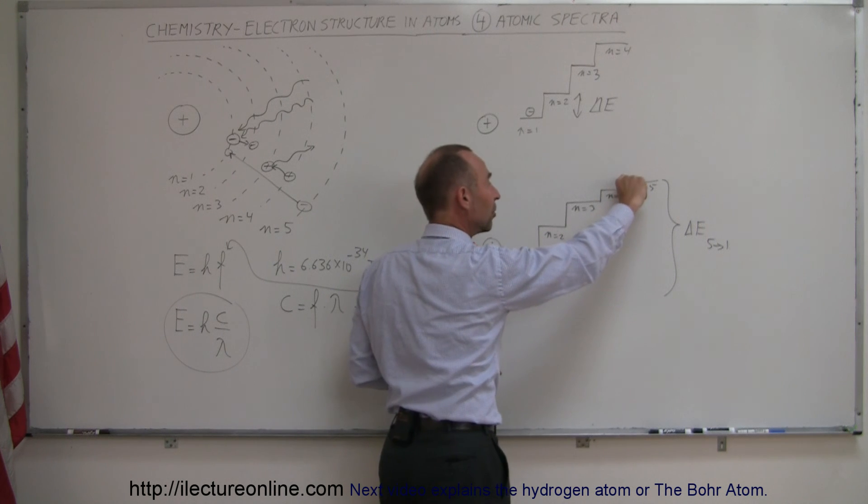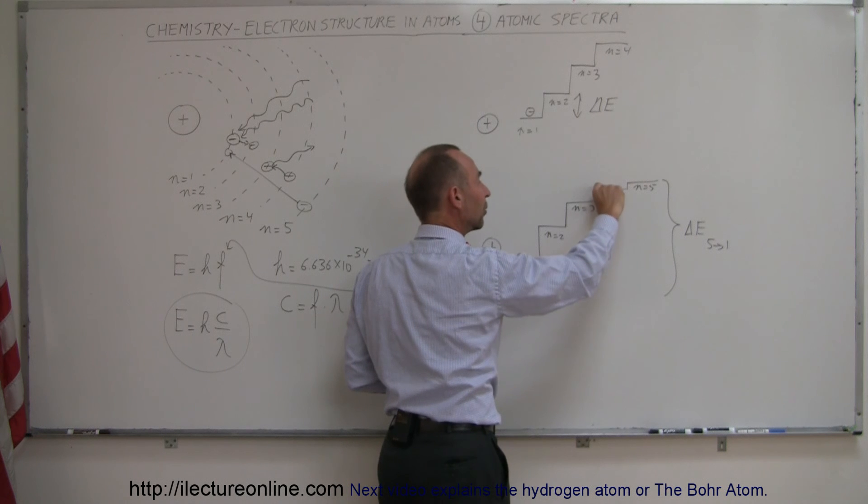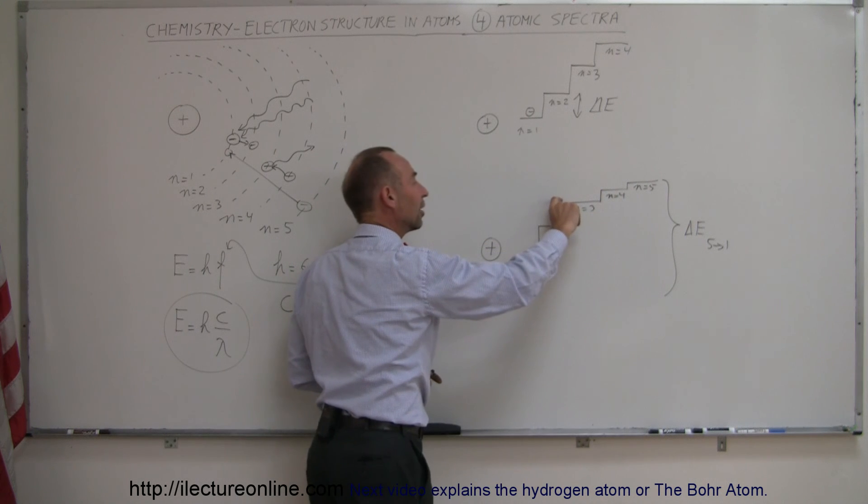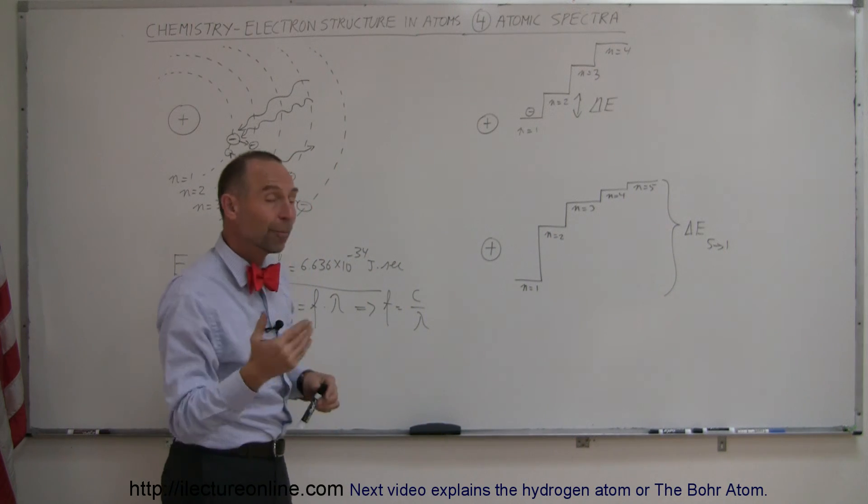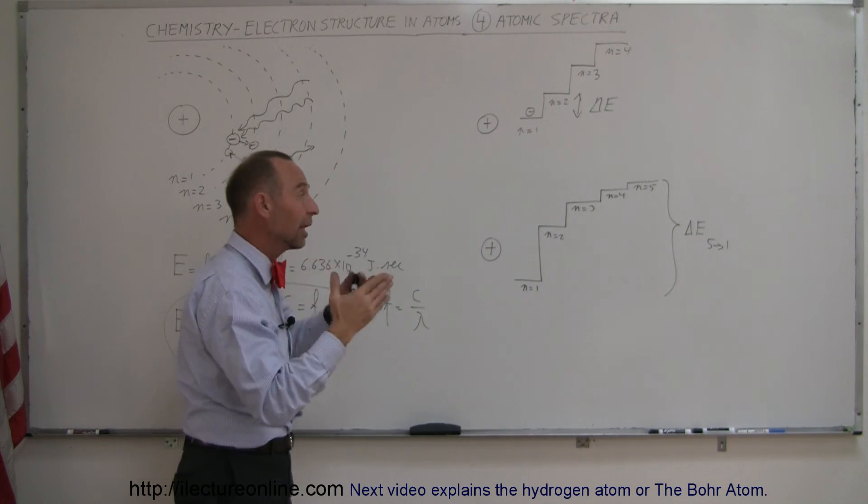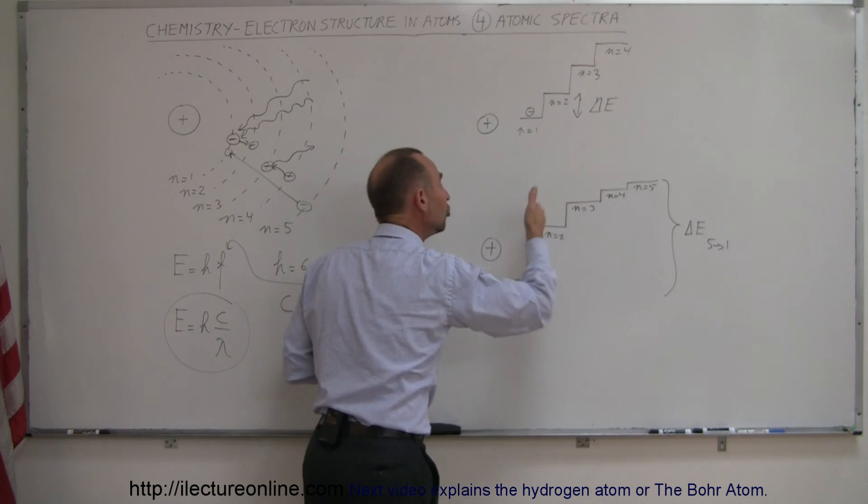It will emit a photon here with this amount of energy, emit a photon there with that amount of energy, emit a photon here with that amount of energy, and it will emit a fourth photon with that amount of energy. So, depending upon what the electron does, it will emit energy according to the jumps that it makes.